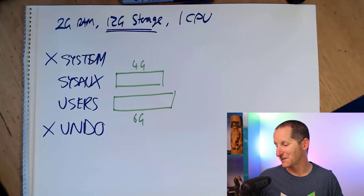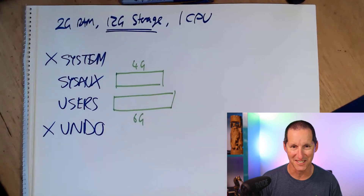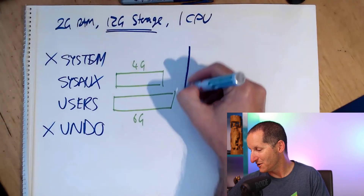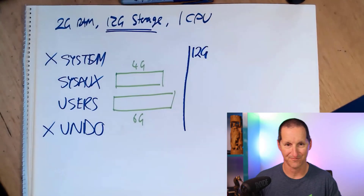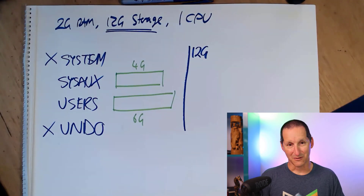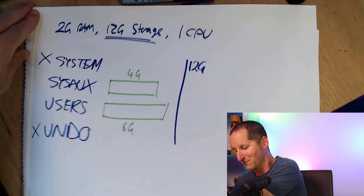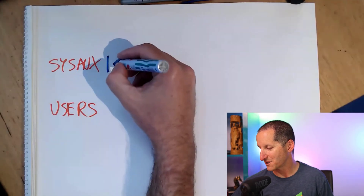You might think: I'll jam everything into the SYSTEM tablespace to try to circumvent the limit. We handle that too — no single data file is allowed to reach 12 gigabytes. If any data file gets to 12 gigabytes, your database is considered full.